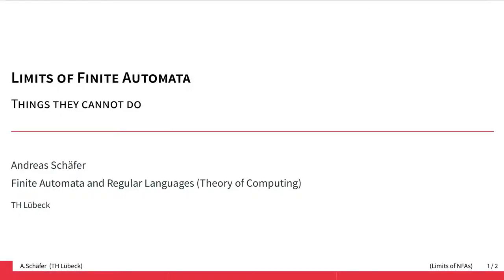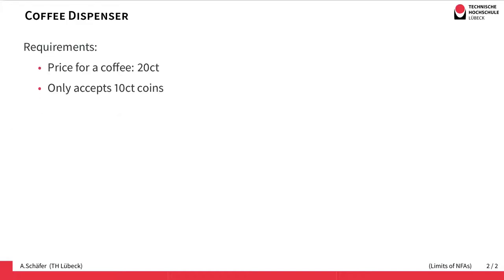So far we have seen a lot of things that you can do with finite automata. In this video we'll have a look at things that you cannot do with finite automata. We'll explore the limits of this automata model, and our running example will be a coffee dispenser.